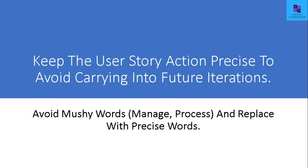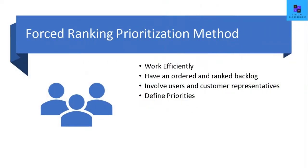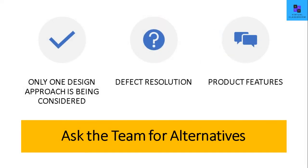A user story is all about persona, action, and benefit. Defining user story actions by avoiding mushy words and using precise words will really help you. Forced ranking prioritization is a highly interactive way to engage how the team understands priority. In Agile, it's easy to jump into conclusions quickly, but you need to know when to ask the team for alternatives — such as when one design approach is being considered, or when defined resolution and product features are being discussed.